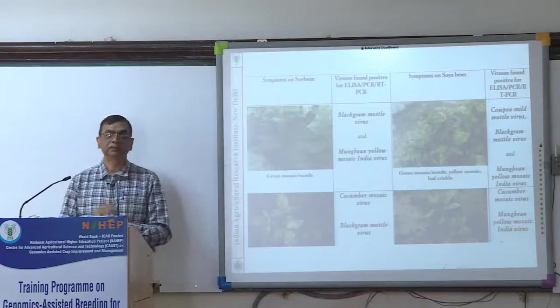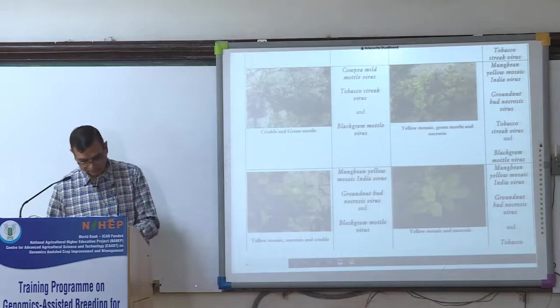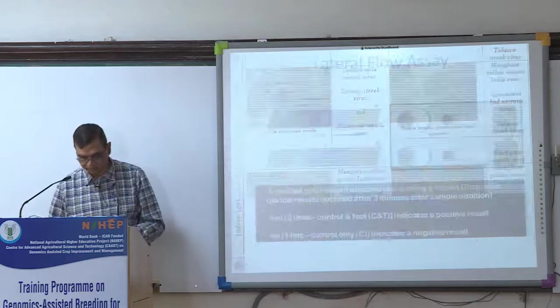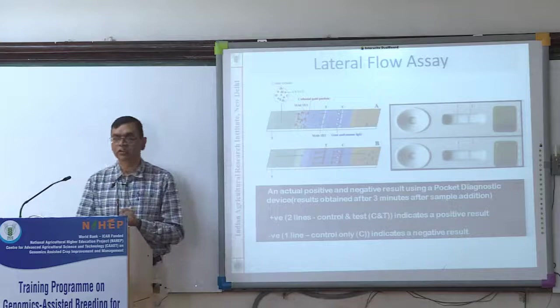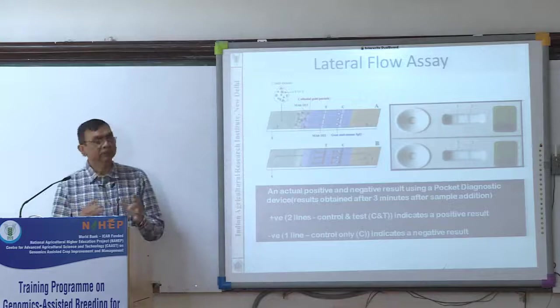One of our PhD students is currently doing screening of 500 soybean genotypes against two or three viruses. You can see different yellow mosaic, necrosis, green mottle, and different viruses associated. This was a very detailed study. I have taken two examples — one vegetatively propagated crop and one field crop.